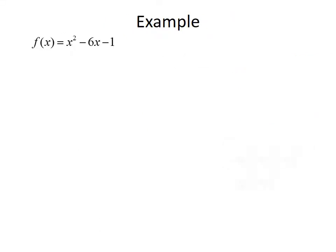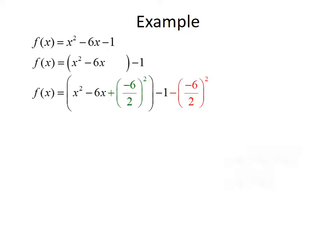Let's look at another example. We have the quadratic function f of x equals x squared minus 6x minus 1. Take a few minutes and see if you can complete the square to write this in standard form. To complete the square, group x squared minus 6x inside parentheses and leave minus 1 outside. Take the coefficient of the middle term, negative 6, divide by 2, and square that. We add negative 6 over 2 squared inside and subtract it outside.